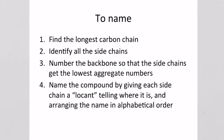To name alkanes, there are only four simple rules. First, find the longest carbon chain. Then identify all the side chains. Third, number the backbone — the longest carbon chain — so that the side chains get the lowest aggregate numbers. Finally, name the compound so that each side chain has a locant, a number telling where it is, and arrange the name in alphabetical order. Now we'll do some examples.